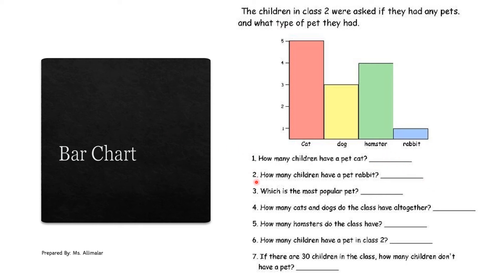Number two: how many children have a pet rabbit? Only one, so write one. Number three: which is the most popular pet? Most popular means which pet students have more of. Students have more cats, so cat is the most popular pet.